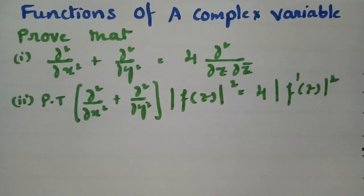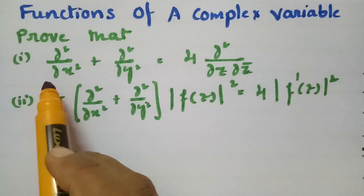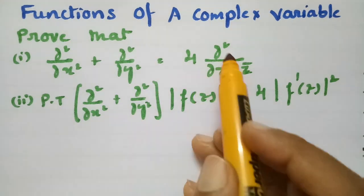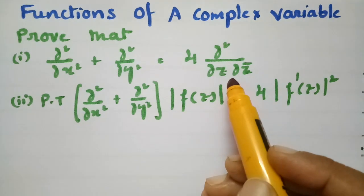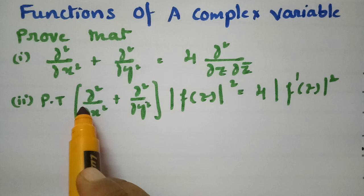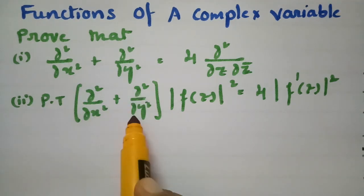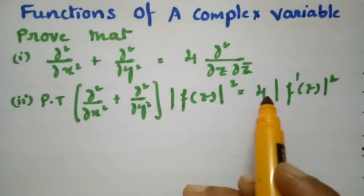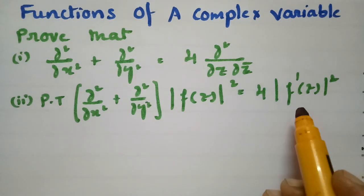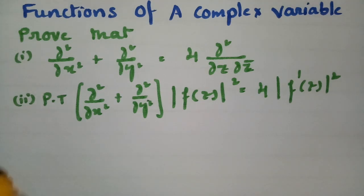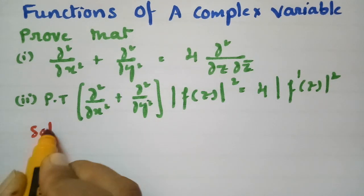In today's video, the problem is from functions of a complex variable. We have to prove that ∂²/∂x² + ∂²/∂y² = 4·∂²/∂z∂z̄. And again, we have to prove that (∂²/∂x² + ∂²/∂y²)|f(z)|² = 4|f'(z)|².